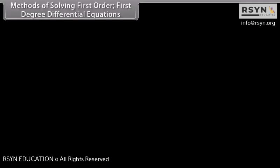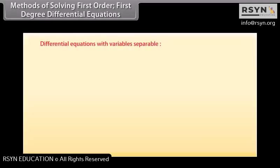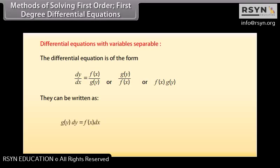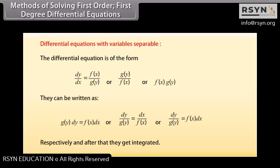Methods of solving first order, first degree differential equations. Differential equations with variable separable: these can be written as g(y)dy = f(x)dx, or dy/g(y) = dx/f(x), or dy/g(y) = f(x)dx, and after separating variables they are integrated.